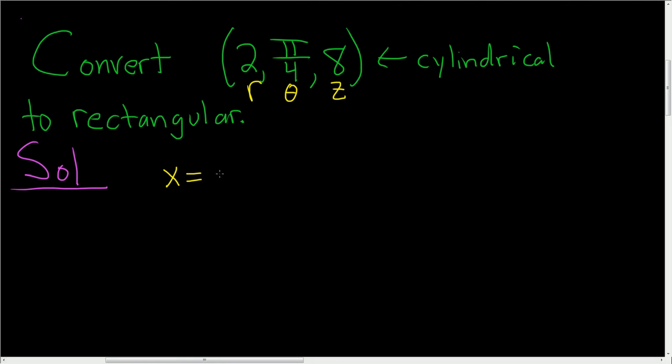x is given by the formula r cos θ. Here r is 2, so this is 2 cos(π/4). This equals 2 times the square root of 2 over 2. The 2's cancel, and we get the square root of 2.